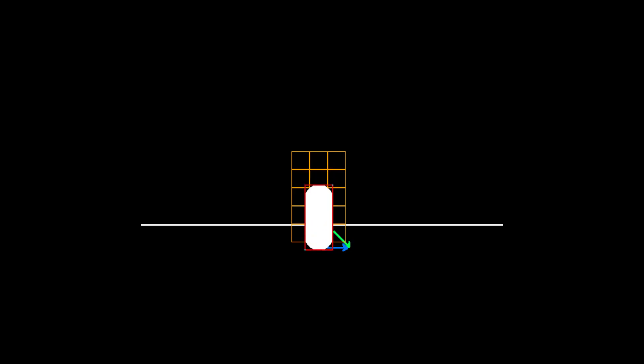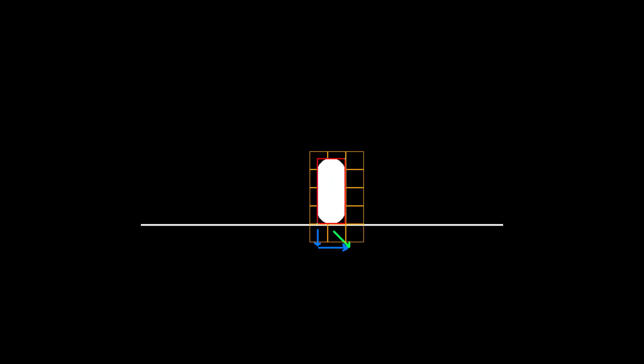First we move the player in the y-axis and move it outside if it collides. If the block is below then we know that the player is on the ground, used for jumping logic. Then we move the player in the x and z-axis respectively, moving the player in each axis again in the case of an intersection with a block.